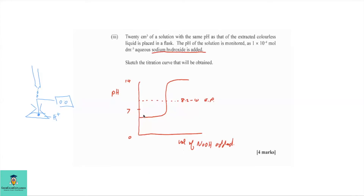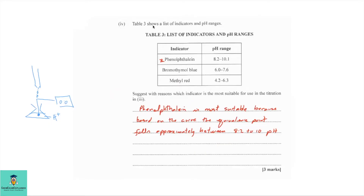Looking at the graph, the pH starts at about 4.2. As sodium hydroxide — which provides OH⁻ — neutralizes the H⁺, there is a rise in pH until the solution becomes alkaline. The graph has pH on the y-axis and volume of sodium hydroxide on the x-axis. The equivalence point for this titration falls at approximately pH 8.2 to 10.